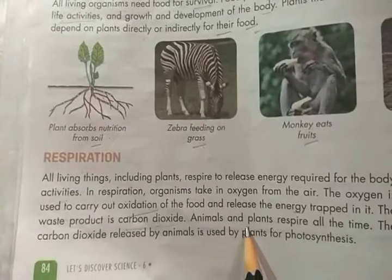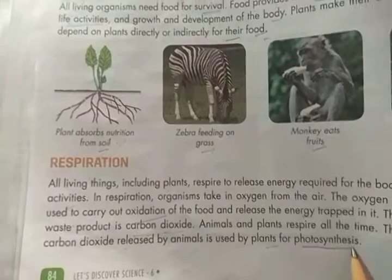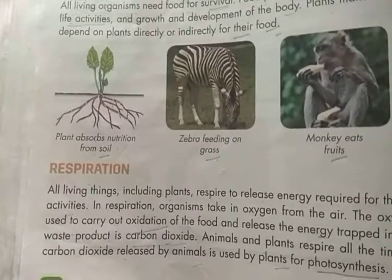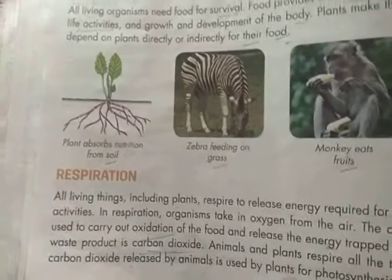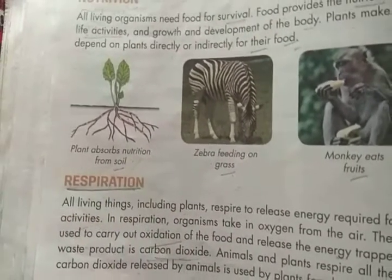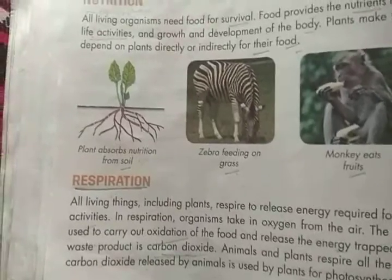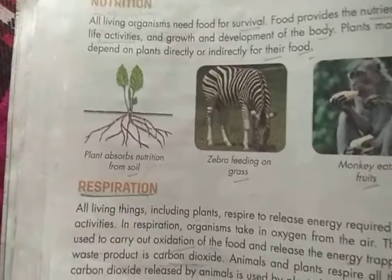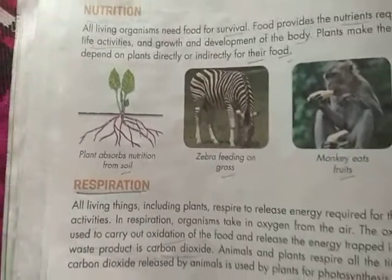Animals and plants respire all the time. The carbon dioxide released by animals is used by plants for photosynthesis. We take oxygen, and plants use the carbon dioxide we release for photosynthesis. So this is possible only through respiration, and it is also a characteristic of living things.